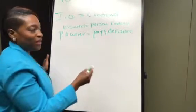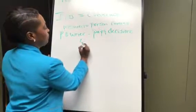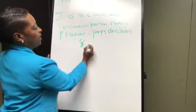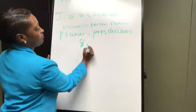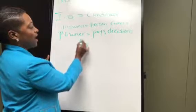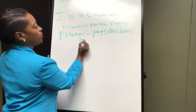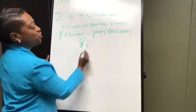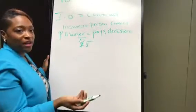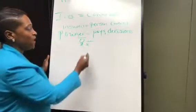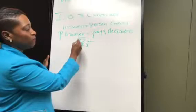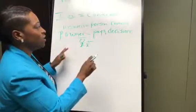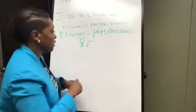For example, let's say I'm an adult and I have a child. I am the owner, and the child is still insured, but they can't own the policy because they're a minor. So I am the owner and they are still insured. Remember that the policy owner and the insured do not have to be the same person.